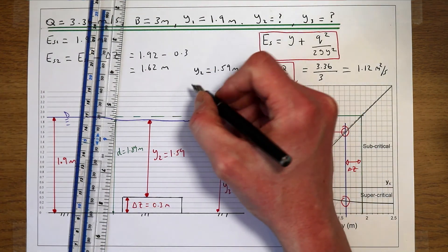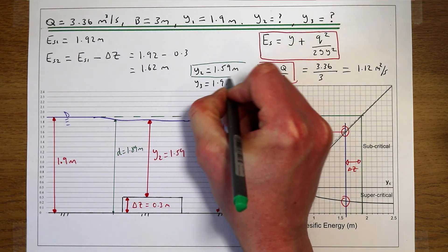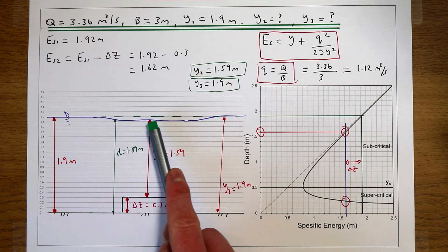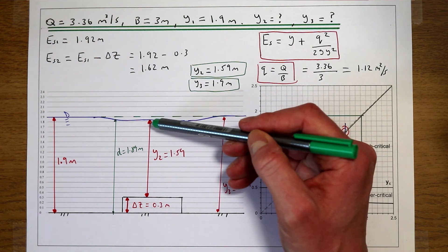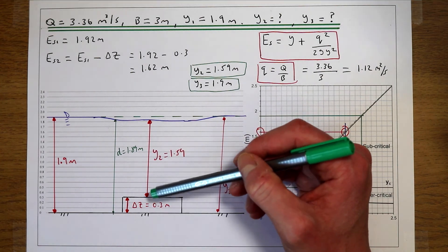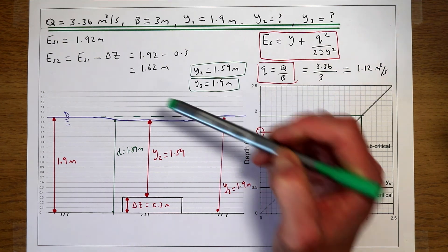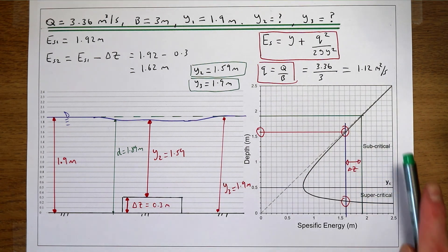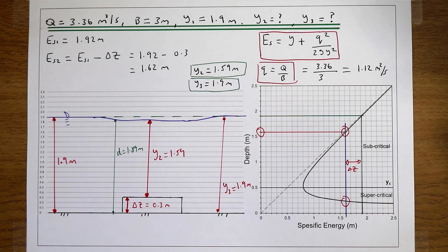In summary: y2 over the step was 1.59 metres, and y3 after the step goes back to 1.9 metres. Physically, the step constricts the flow — the cross-sectional area is smaller, so with a constant flow rate the velocity increases, causing the flow depth to drop slightly over the step. For a simple case of subcritical flow with a small bump, we get a small reduction in total depth, and we can read y2 off the y-axis of the depth-energy relationship.